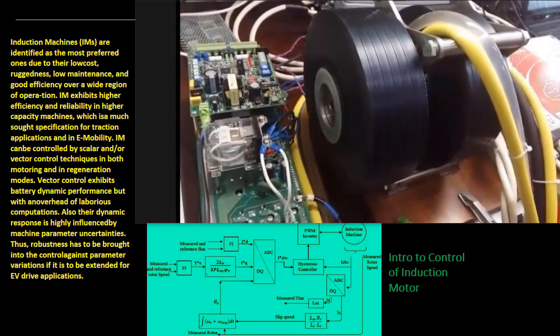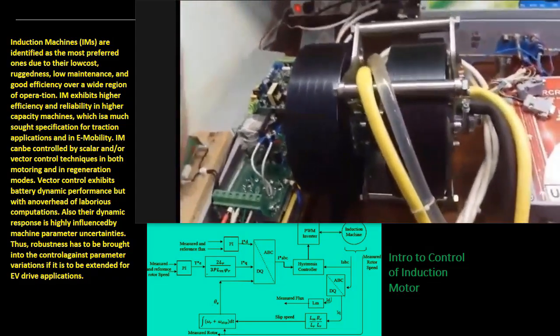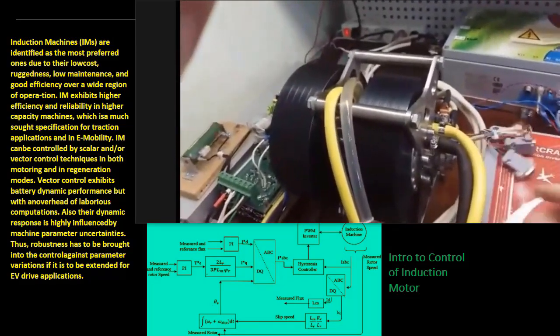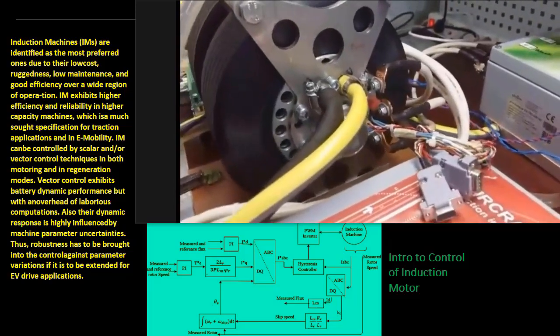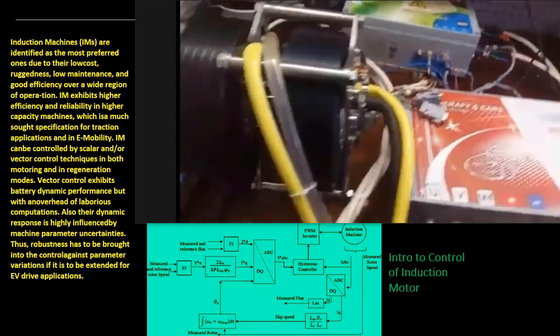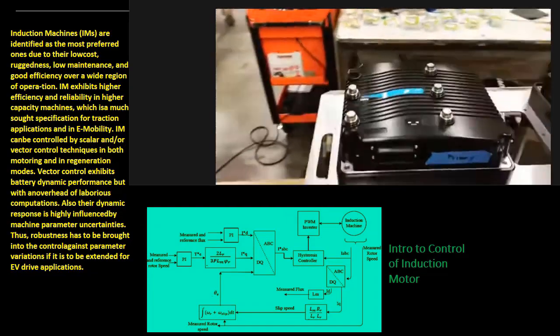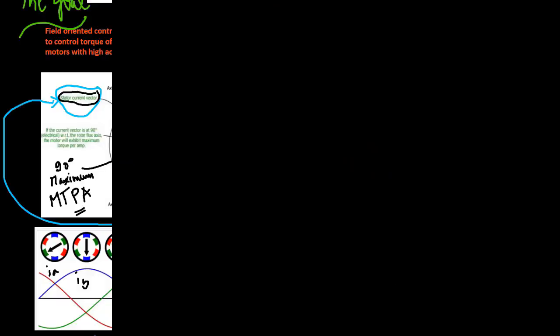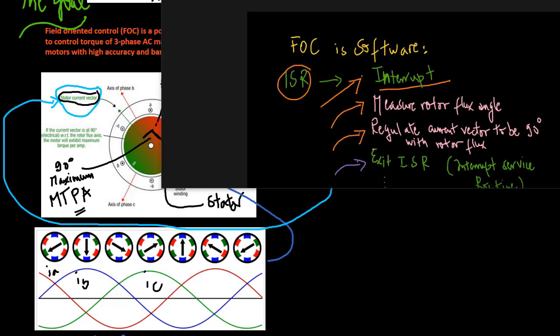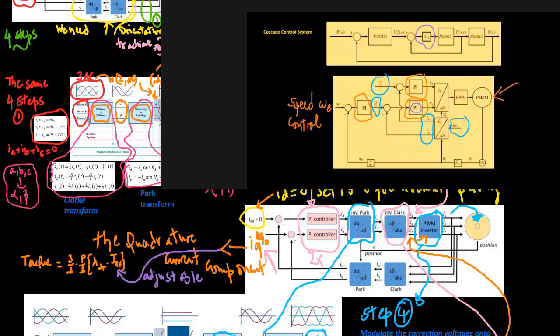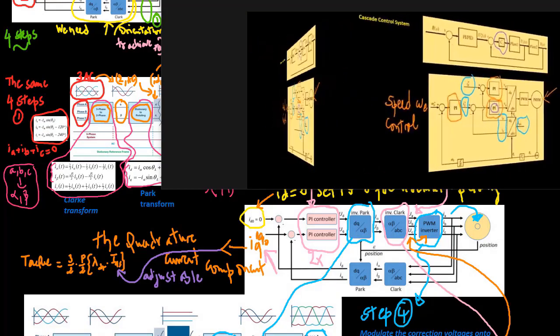Also, their dynamic response is highly influenced by machine parameter uncertainties. Thus, robustness has to be brought into the control against parameter variations if it is to be extended for electric vehicle drive applications. In the last videos we have already looked at the field oriented control strategy when we analyzed the PMSM, and we will apply this also for the asynchronous machine.